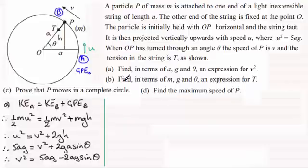Now for the next part, part B, finding in terms of M, G and θ an expression for T. Well that's going to mean resolving towards the centre of the circle. So we need to add some more forces to this diagram. We've got the tension T here. We also got the weight of the particle, MG. They're the only two forces acting on the particle.